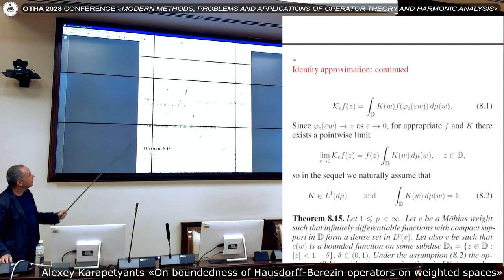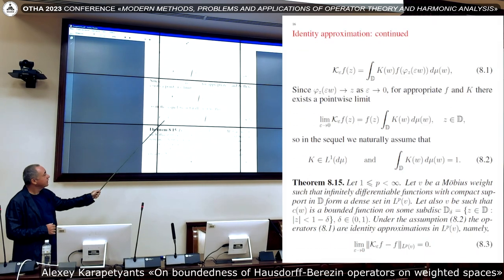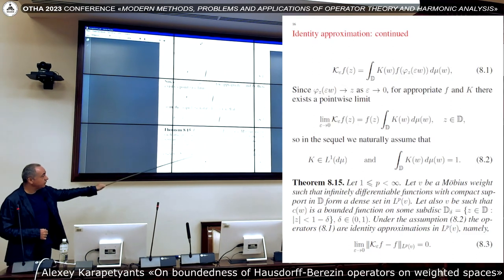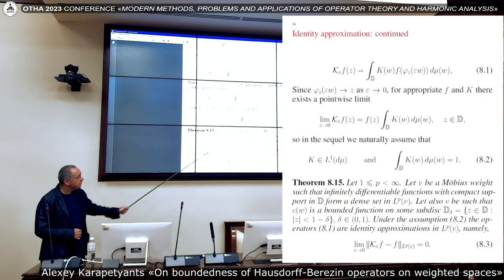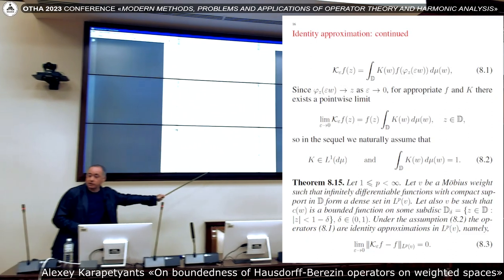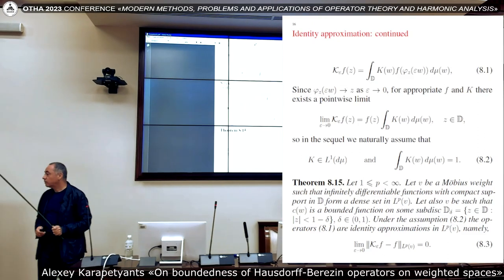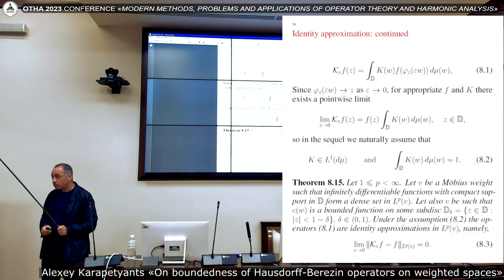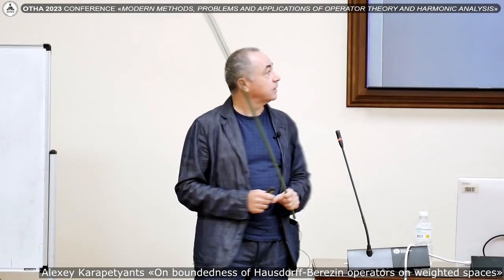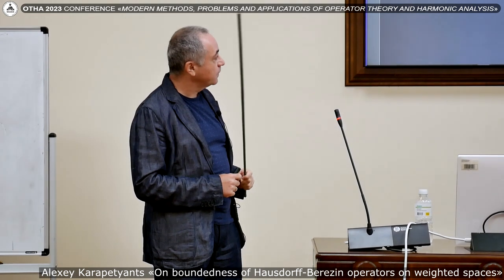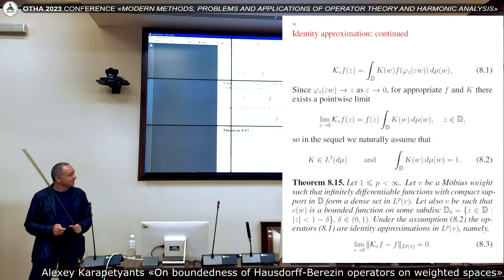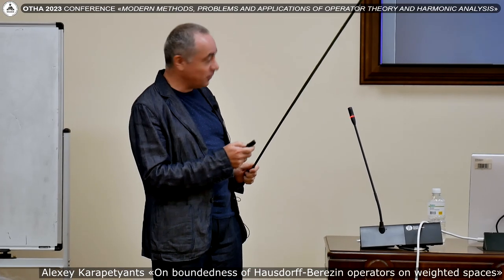At least formally, you have an approximative construction, right? So if you just imagine, if you just assume that k is from L¹ and integral of k equals to 1, then the following theorem takes place. Under these conditions, which are quite natural, our operators are identity approximations in L^p, the weighted L^p space. Just a very lame question. What is an example of Möbius weight such that infinitely continuously differentiable functions are not dense? I don't have an idea right now. I have to think about it. Why is this first condition? What is V that does not satisfy the first? It's a good question. I may think about it. Right now I have no answer. Maybe it's almost true. Maybe. I have no answer right now, but I think about it.